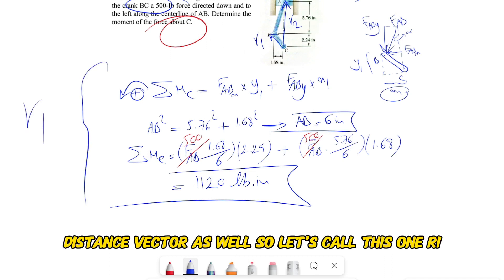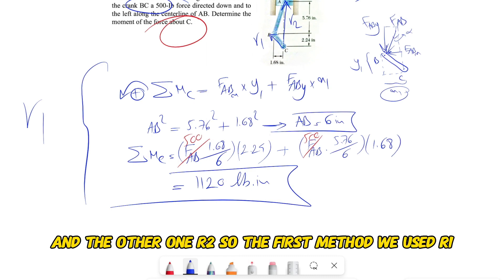So let's call this one r1 and the other one r2. So the first method, we used r1, but in the second method we're going to use r2.